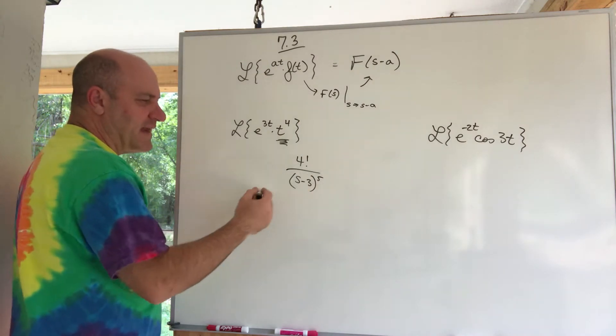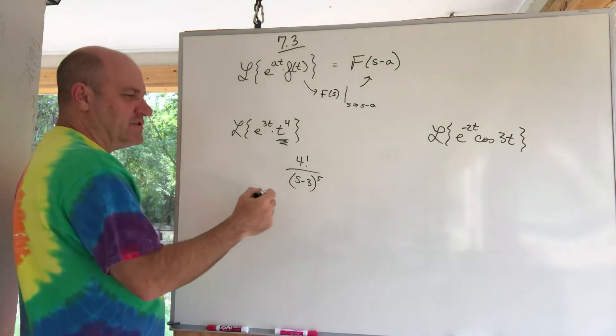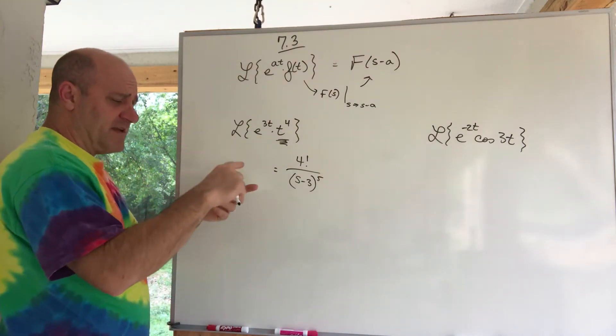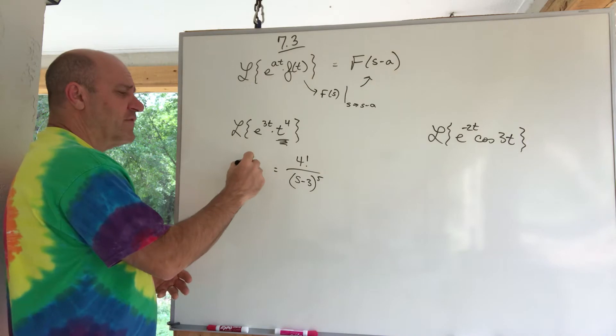By the way, we do like these cleaned up a little bit. There's not much to do here, but 4 factorial is 4 times 3 times 2 times 1, 24 I guess.